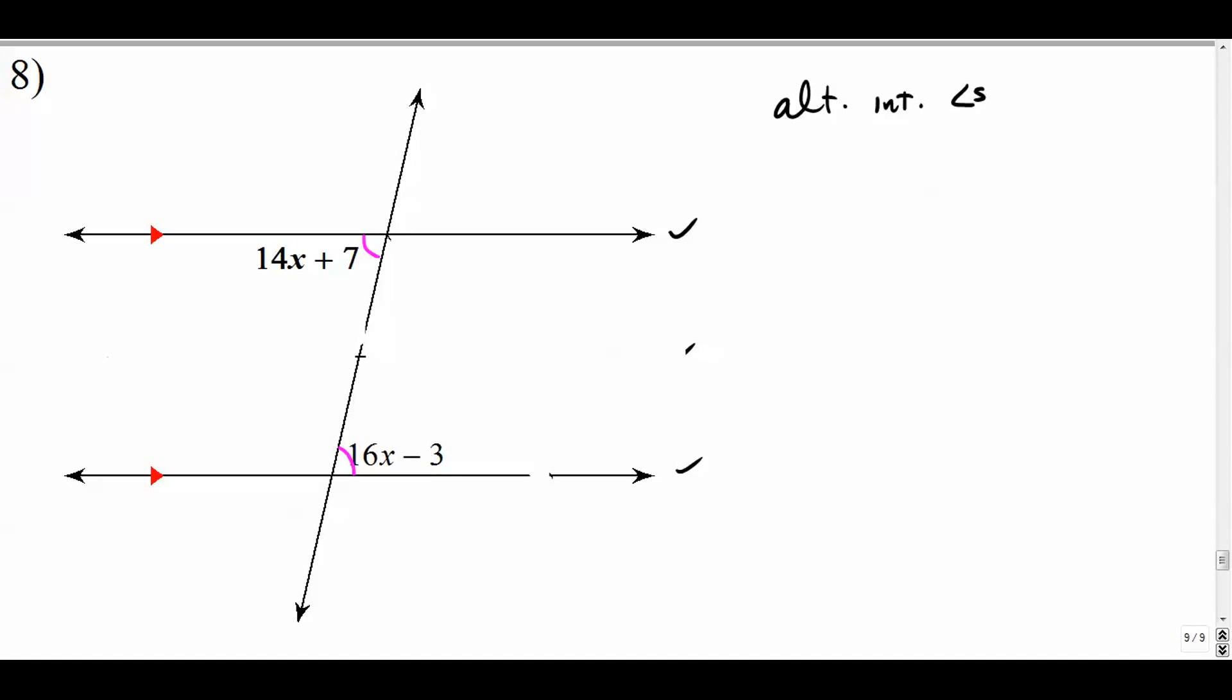And I'm totally fine with you abbreviating it like that for my class. Alternate interior angles are congruent. So we just set them equal to each other. 14x plus 7 equals 16x minus 3. I'm going to find my bigger x term and leave it where it is. So I'm going to subtract 14x from both sides. We get 7 is equal to 2x minus 3. I'm going to add 3 to both sides. 2x is 10 divided by 2. X is 5. Don't leave it right there.